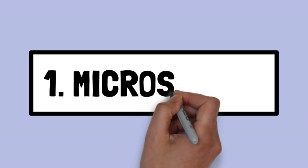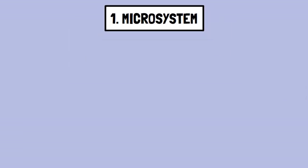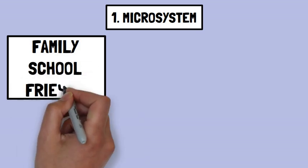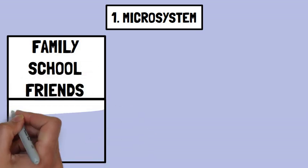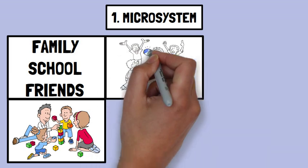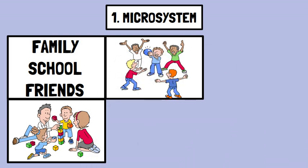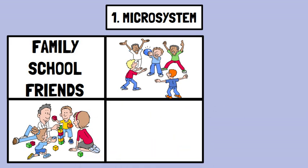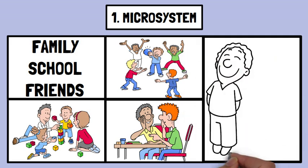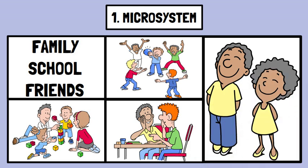Number one: Microsystem. This is the closest layer to the individual. It includes direct relationships with people and environments such as family, school, and friends. A child's behavior and growth are strongly influenced by interactions with parents, teachers, and classmates. A child who has supportive parents, enjoys school, and has good friends is likely to have positive developmental outcomes, as these immediate environments directly shape their experiences, behavior, and emotions.